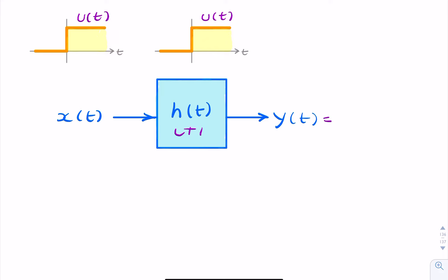You can either find the convolution of the input with the impulse response, or you can simply take the impulse response and integrate it to find the step response. Because the step response, by definition, is the integral of the impulse response.